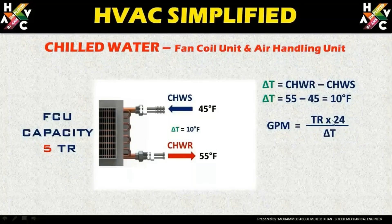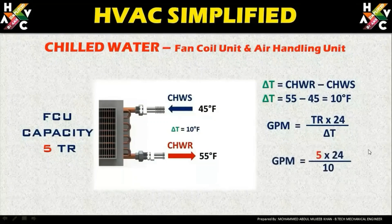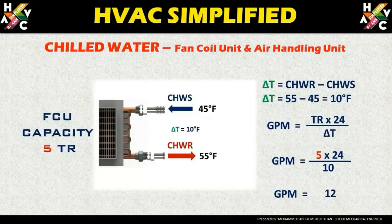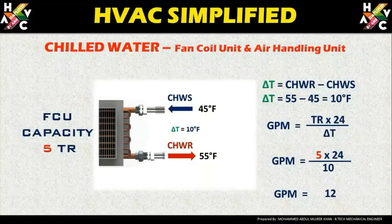Now we apply the GPM formula: GPM equals TR multiplied by 24 divided by delta T, which is 5 tons multiplied by 24 divided by 10 (the delta T). So the GPM for this 5-ton fan coil unit based on these parameters is 12 GPM. Based on this formula, any chilled water supply parameters can be derived.